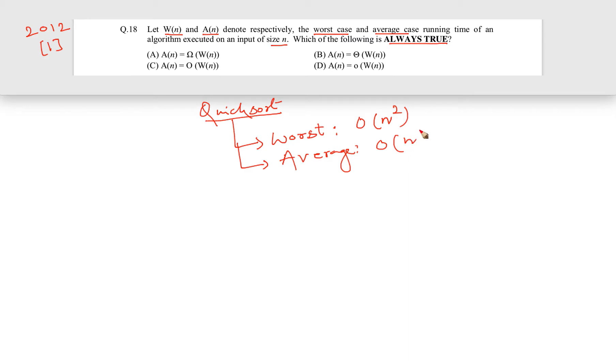This much you know. Now they are saying let's consider this as w(n), which is worst case, and this as a(n), which is average case running time for n elements. Now what can you say about the expressions n log n and n square? If this is a(n) and this is w(n), then what can you say?